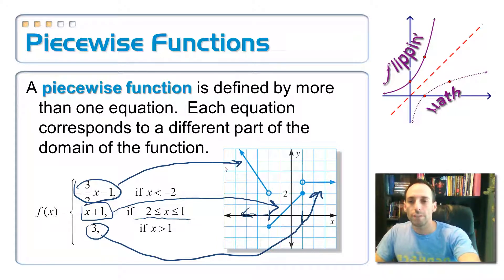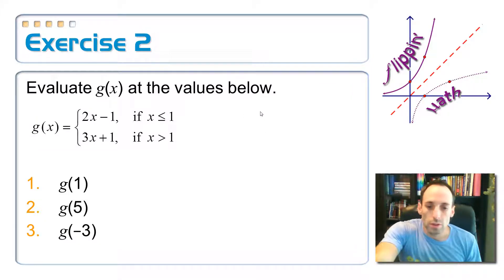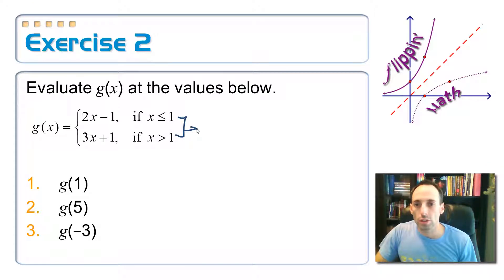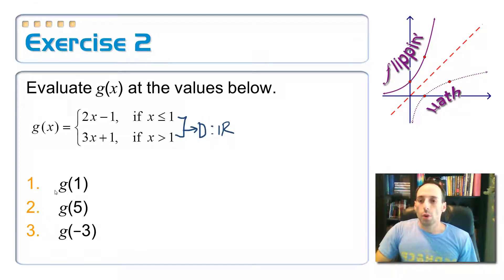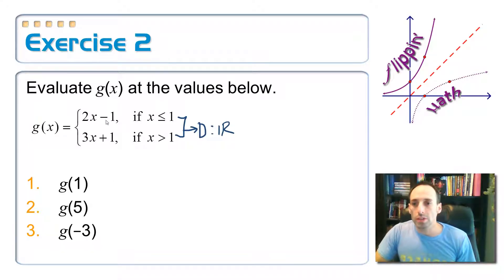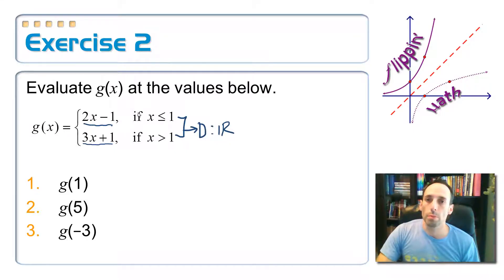Let's try to evaluate a piecewise function. Here's my new piecewise function: g(x) equals two x minus one, as long as x is less than or equal to one, and three x plus one if x is greater than one. Notice that the domain for this is actually all real numbers — it's just broken up in two parts: the part where you're less than or equal to one, or the part where you're greater than one. When I'm trying to evaluate g(1), you have to decide what part of the equation to stick it into. You don't stick it into both — I'm going to repeat that because it's important. You do not stick the number one into both pieces, because if you did, you wouldn't have a function — you'd have two different outputs for that one input.